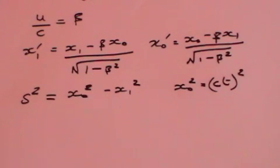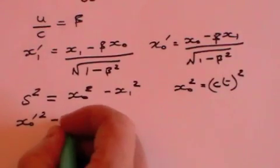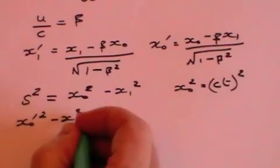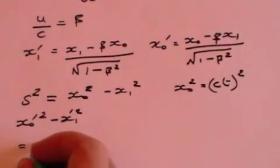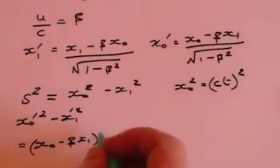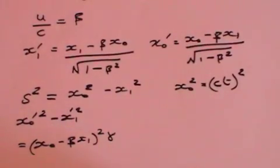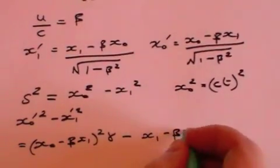Now, let's look and see what happens to the term X0 prime squared minus X1 prime squared. Well, that equals X0 minus beta X1 all squared times gamma, minus X1 minus beta X0 squared times gamma.